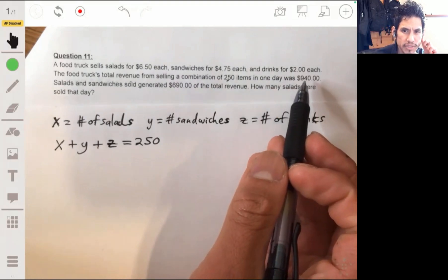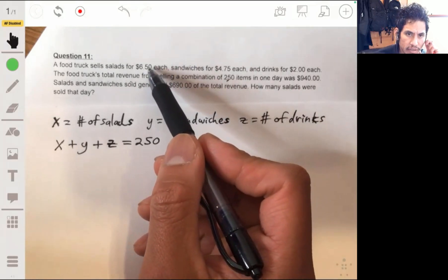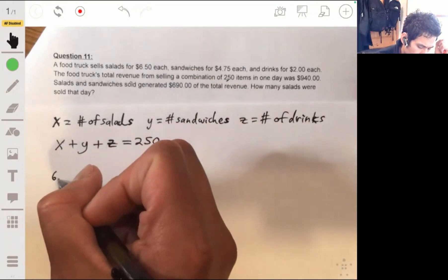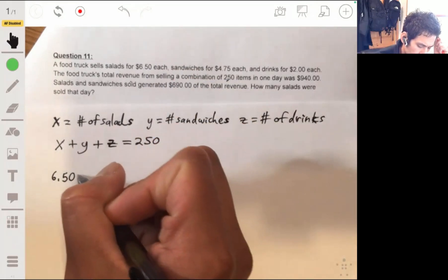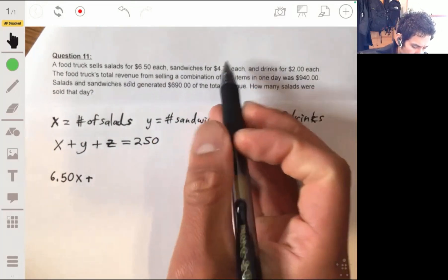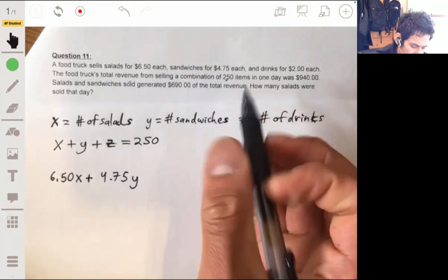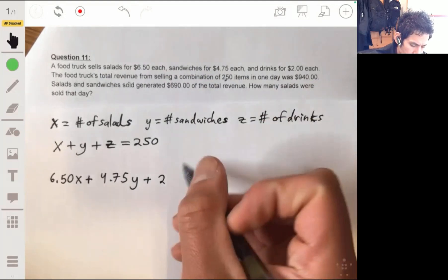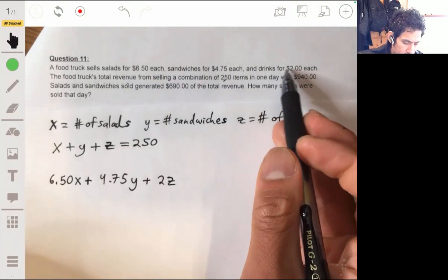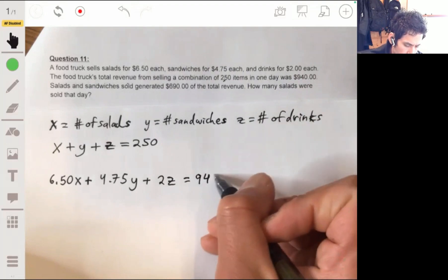And then we're told that the total revenue was $940. So since each salad is $6.50, we can find the total revenue by taking $6.50 times the number of salads sold plus $4.75 times the number of sandwiches sold plus $2 times Z, because that's the number of drinks sold, and that'll equal $940.